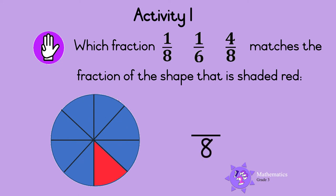How many parts are red? Let's count. 1. So only 1 part of the 8 parts is red. We write the 1 at the top of the fraction like this. So the fraction is 1 eighth. This is the fraction that matches the fraction of the shape that is shaded red. 1 eighth.